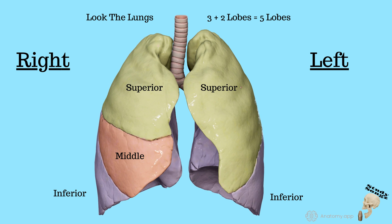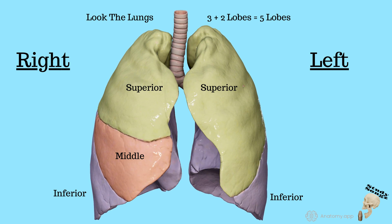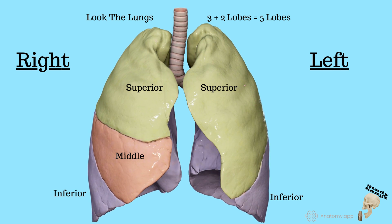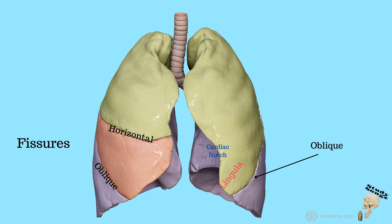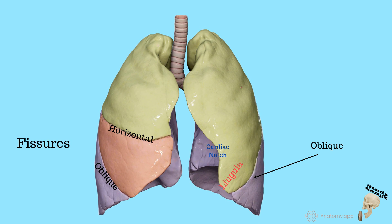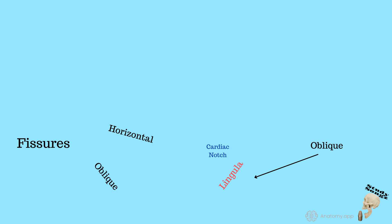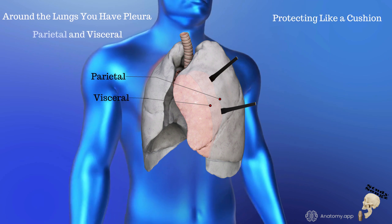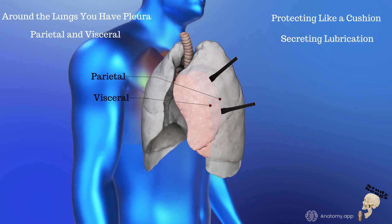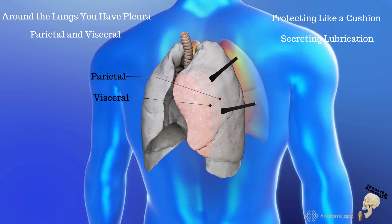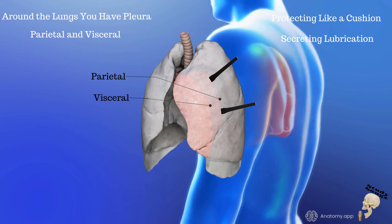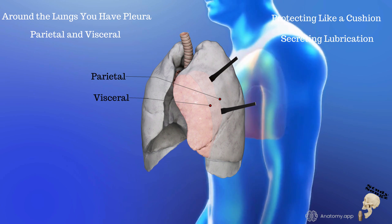Five lobes total: superior, inferior lobes; middle lobe is on the right. Horizontal and oblique fissures separating things. Lingula, and a notch called the cardiac notch. Around the lungs you have pleura — parietal and visceral — protecting like a cushion, secreting lubrication.